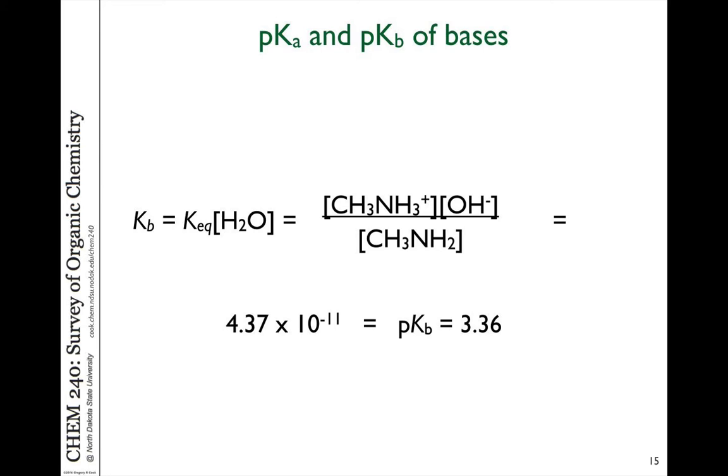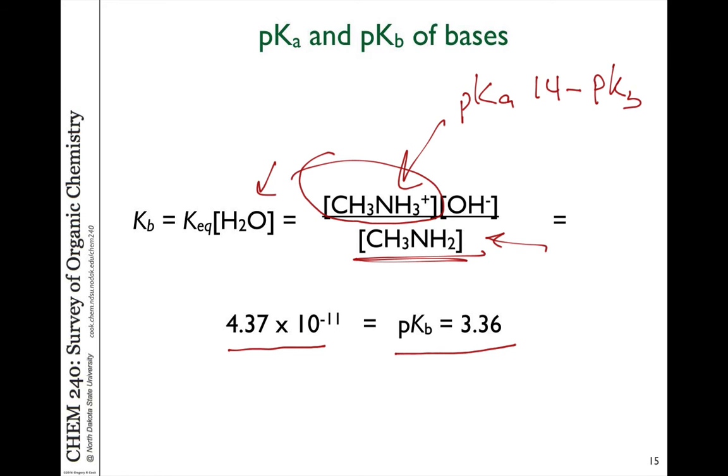So for example, if we look at the kb of the molecule in an aqueous solution where water concentration is constant, we have the product ammonium over the starting material NH2. The kb is 4.37 times 10 to the minus 11th, and the pKb is 3.36.